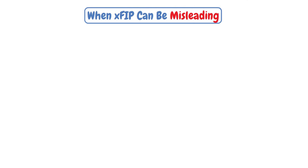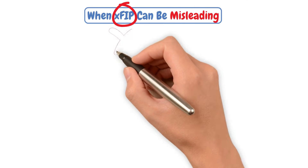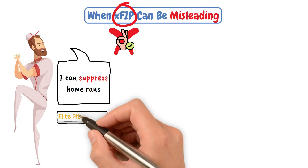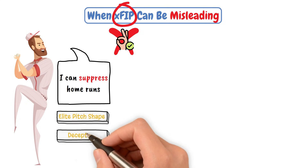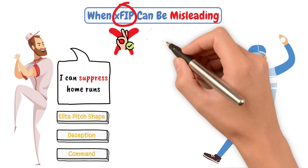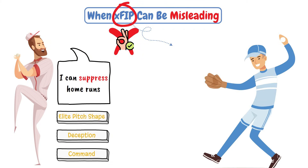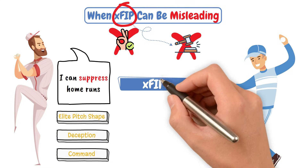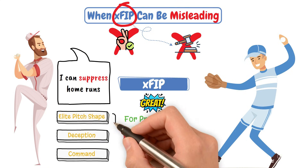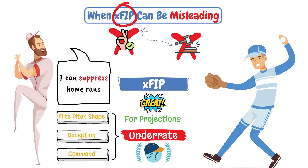However, XFIP isn't perfect. Some pitchers genuinely suppress home runs with elite pitch shapes, deception, or command. Others give up loud contact by nature, and XFIP doesn't penalize them enough. While XFIP is great for projections, it can underrate pitchers who are truly elite at limiting hard contact. That's why we have to pair it with other stats.